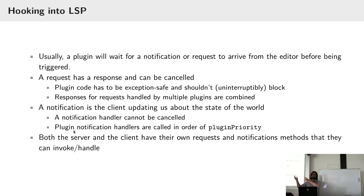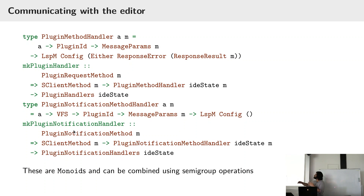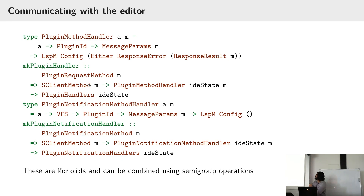This is how you define these two plugin handlers. You have make plugin handler, which takes a singleton SClient method that chooses which method you're going to handle, and you provide it a handler.